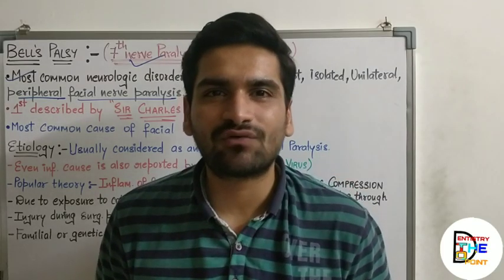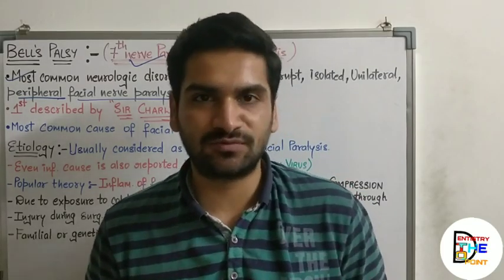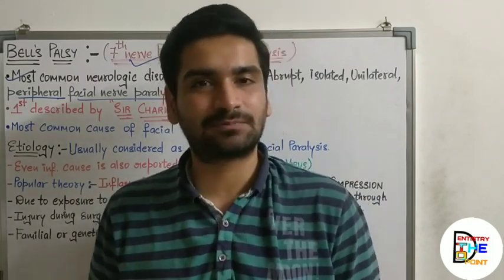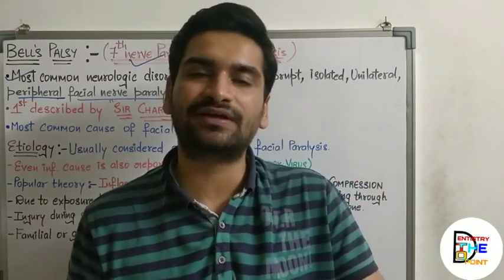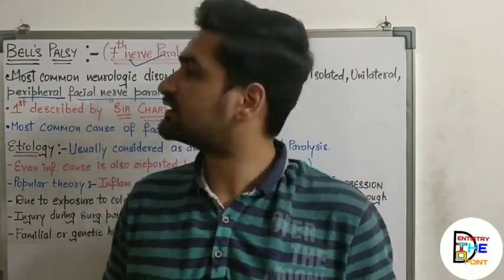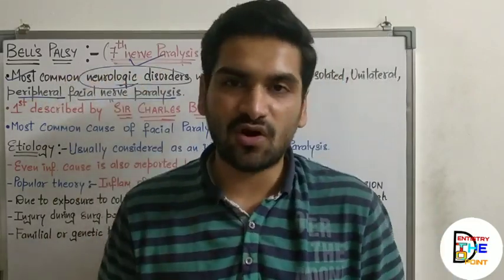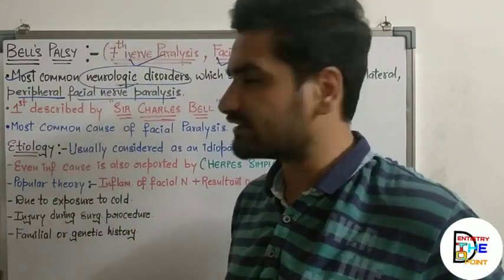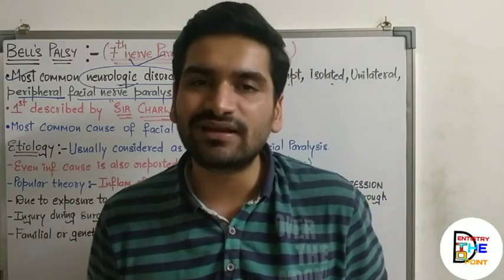Hi everyone, welcome back to our channel 'Dentistry to the Point.' This is Dr. Dhruvil Manik. In this video we are going to discuss about Bell's palsy. Bell's palsy is also known as 7th nerve palsy or facial paralysis. This is considered to be the most common neurological disorder and the most common form of facial paralysis, which shows abrupt, isolated, and unilateral involvement.